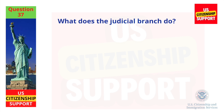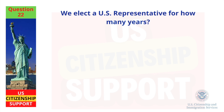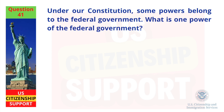What does the Judicial Branch do? Reviews laws. We elect a US representative for how many years? Under our Constitution, some powers belong to the Federal Government. What is one power of the Federal Government? To print money.